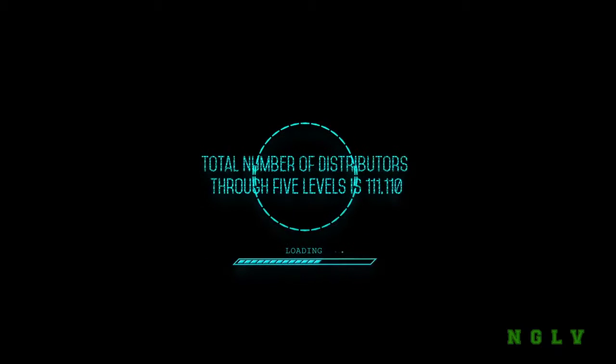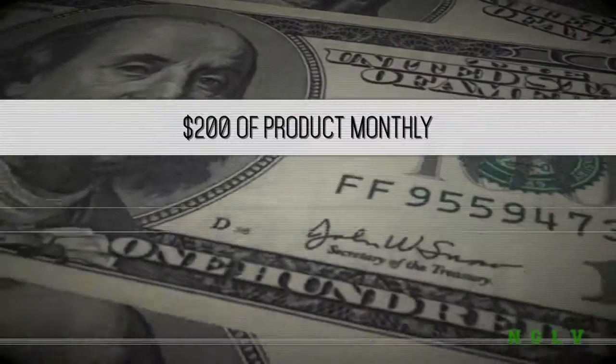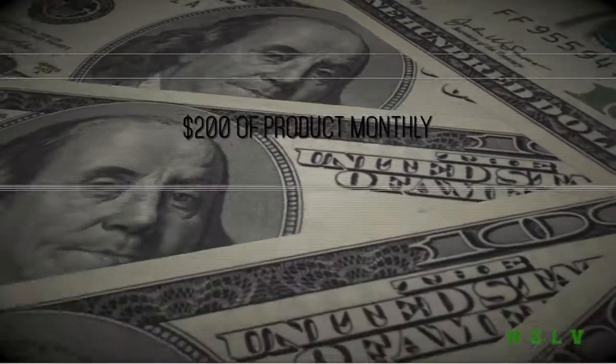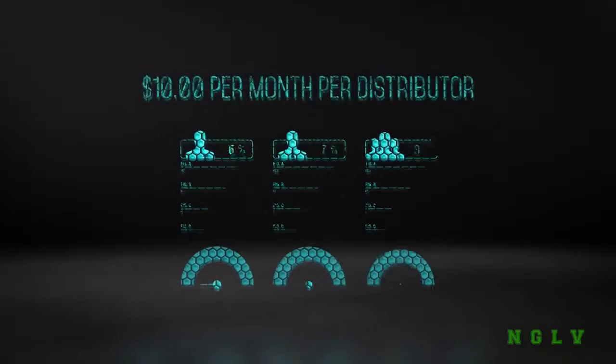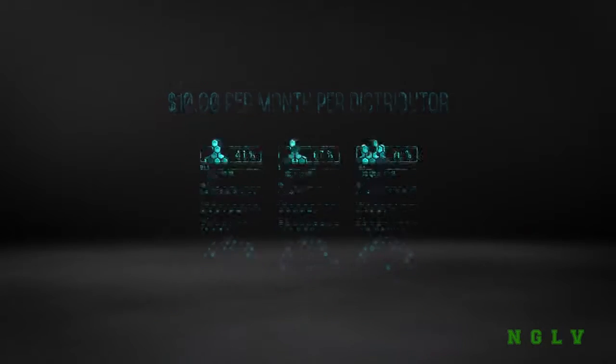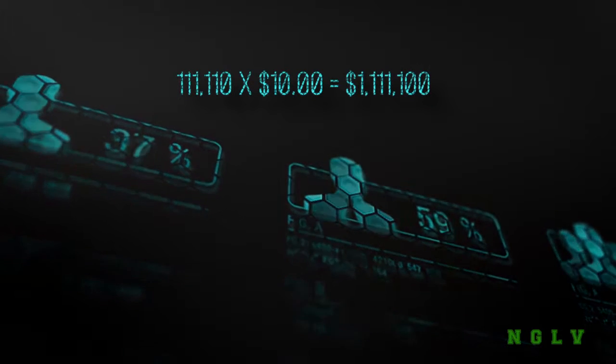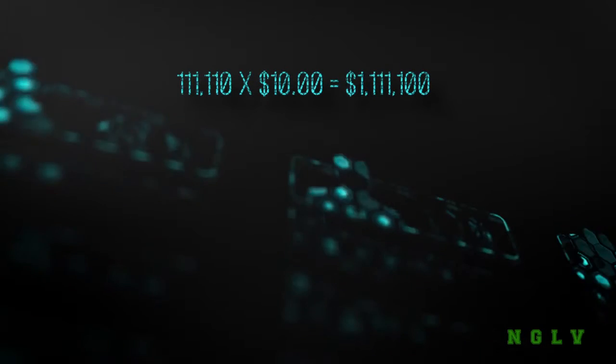Repeating this duplication through five levels results in 111,110 distributors on all five levels. Assuming each distributor purchases $200 of product monthly, with an assumed commission of 5% equals $10 per month per distributor. This would give you an income of $1,111,100 per month.